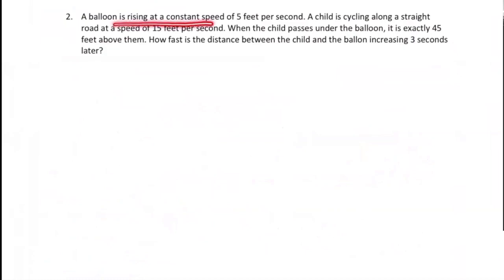A balloon is rising at a constant speed of five feet per second. A child is cycling along a straight road at a speed of 15 feet per second. When the child passes under the balloon, the balloon is exactly 45 feet above the child. How fast is the distance between the child and the balloon increasing three seconds later?